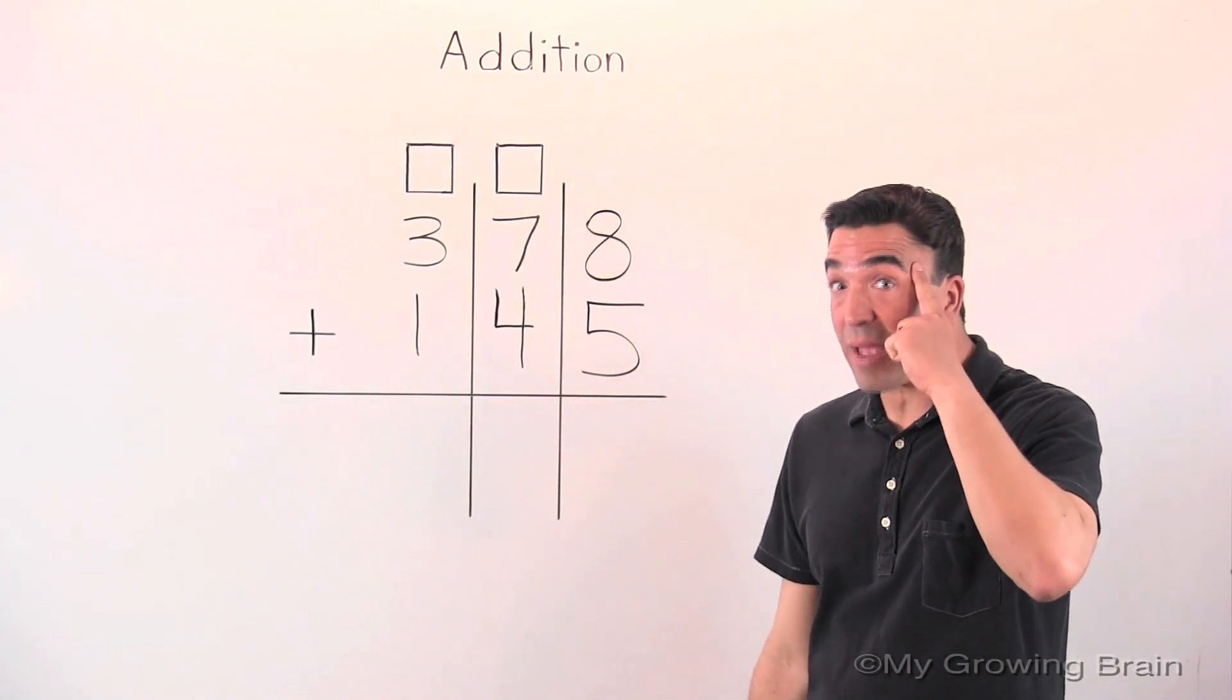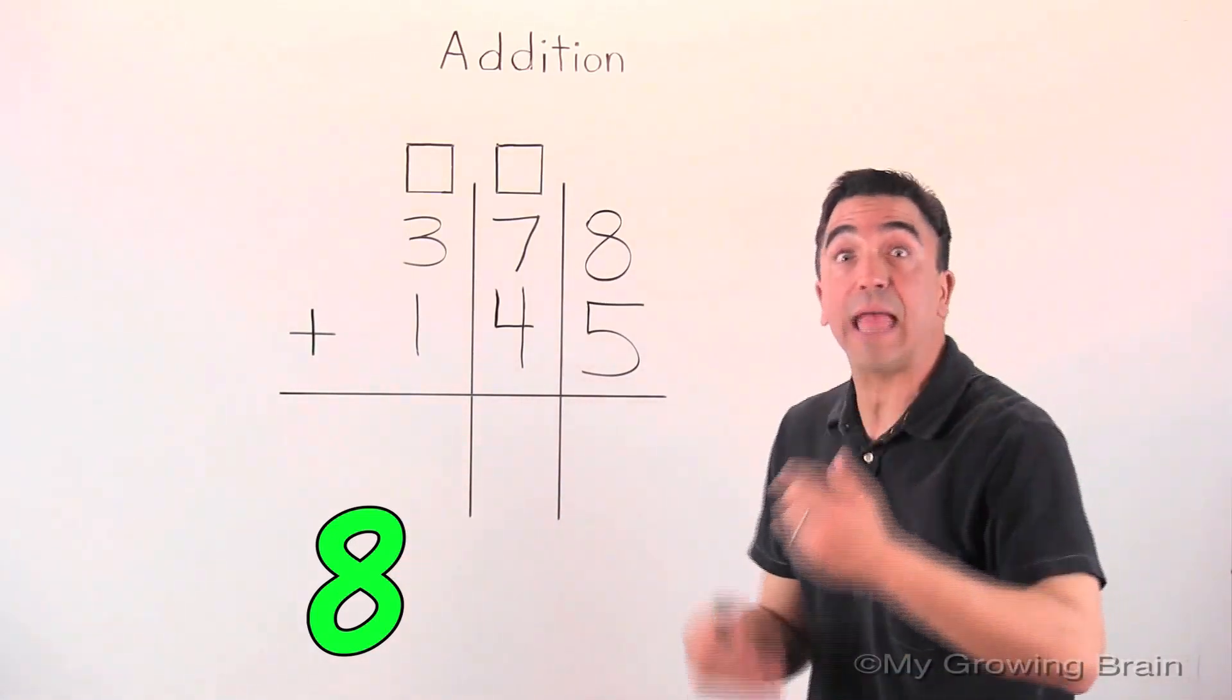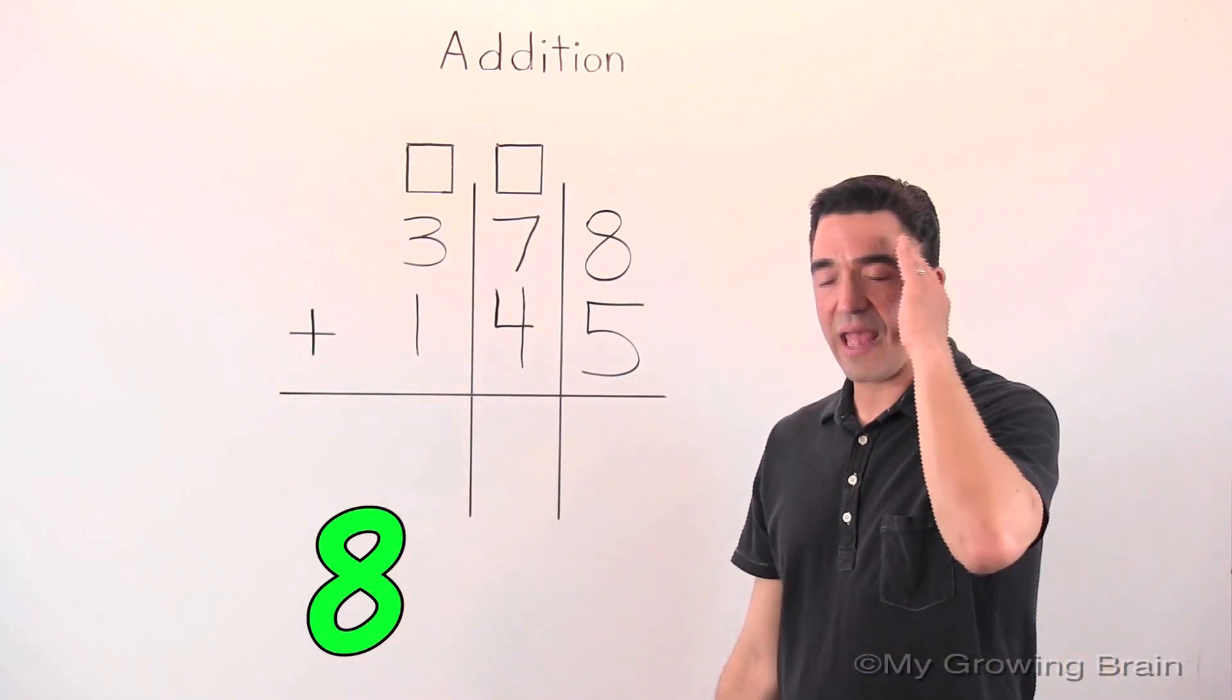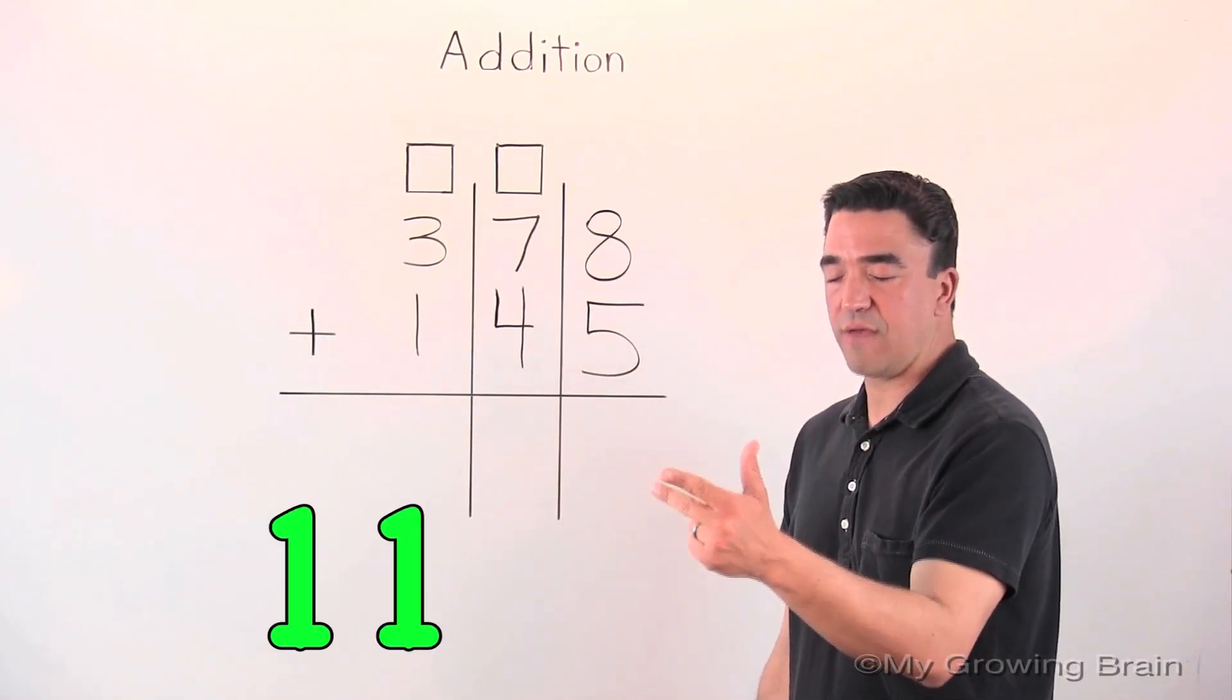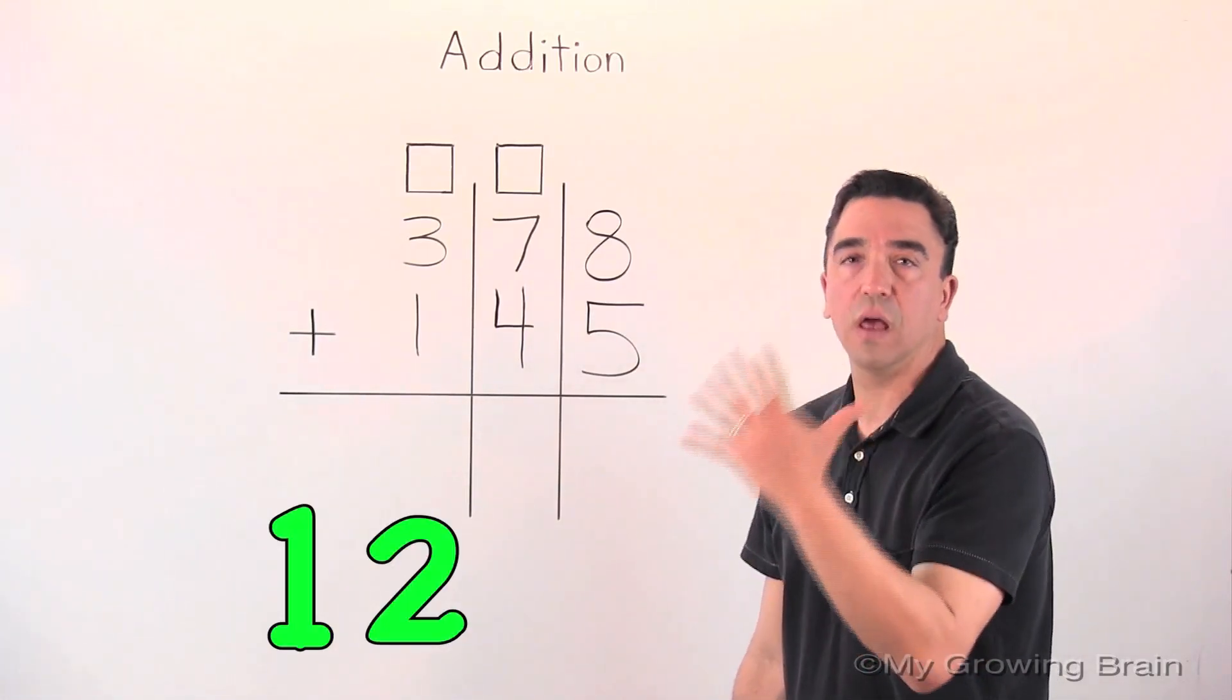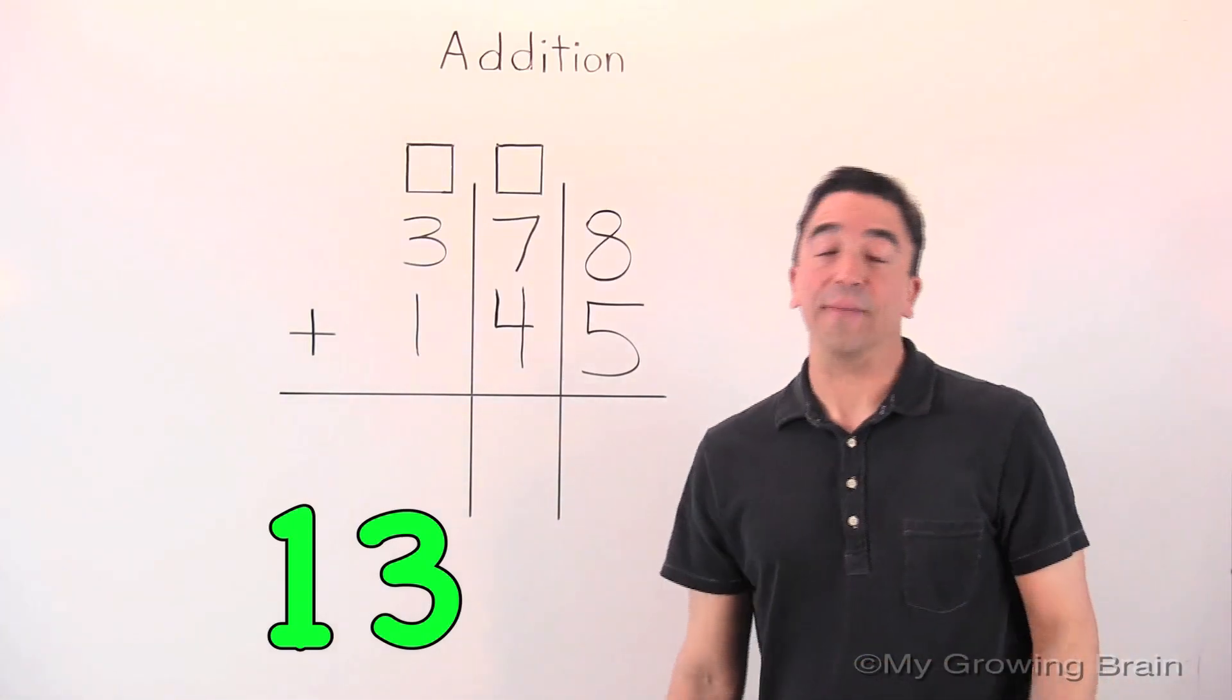I'm putting the eight in my head. There's the eight. Now I'm going to count on five: eight, nine, ten, eleven, twelve, thirteen. Thirteen!